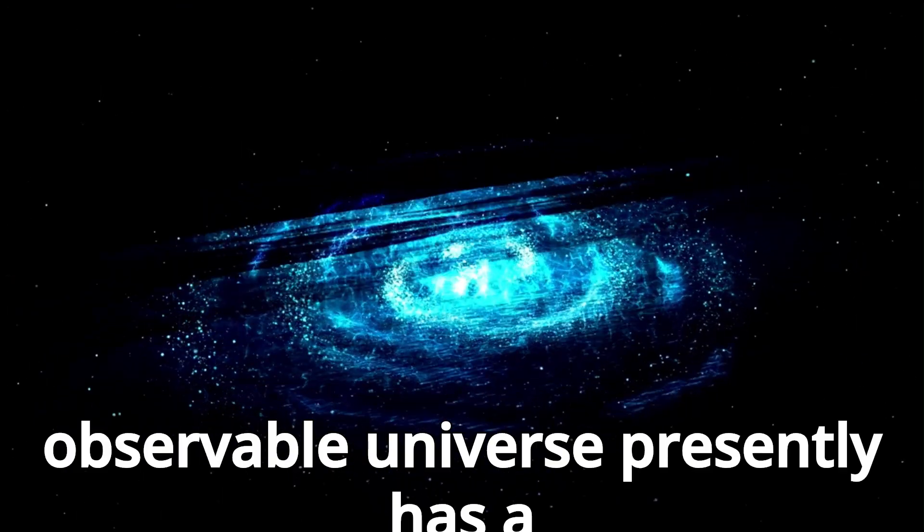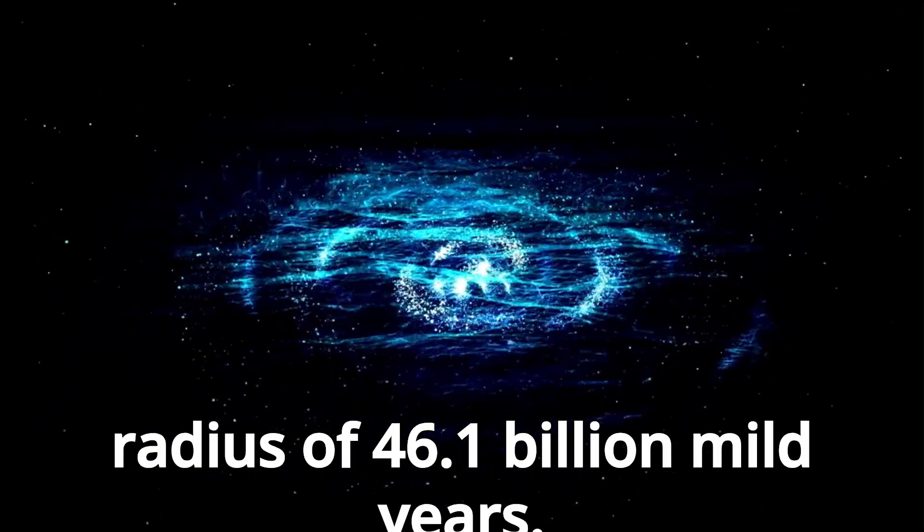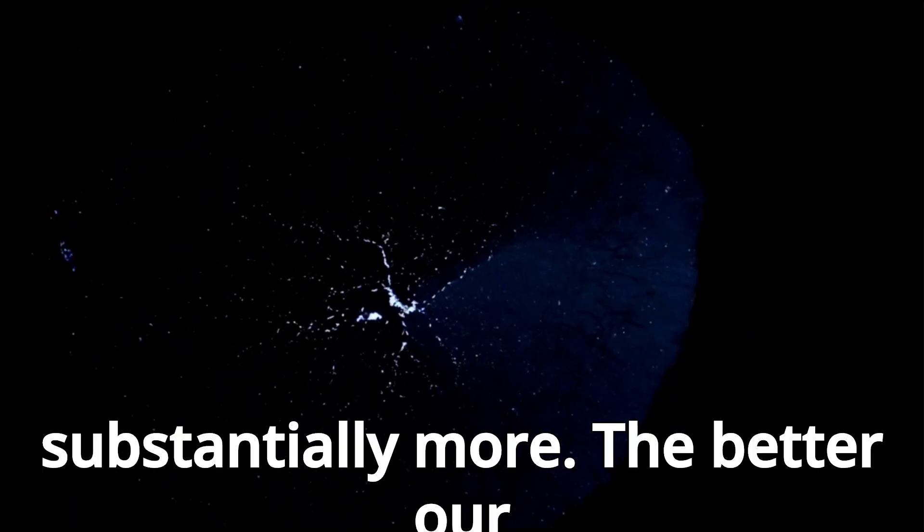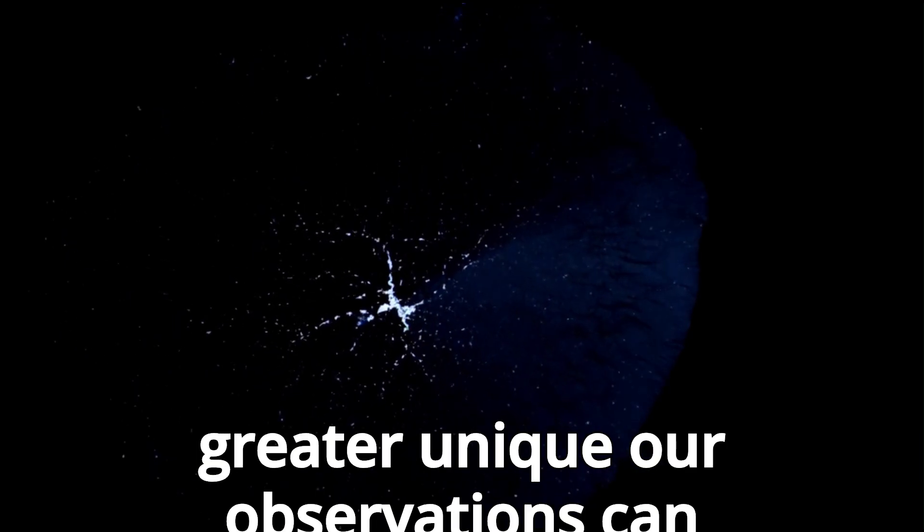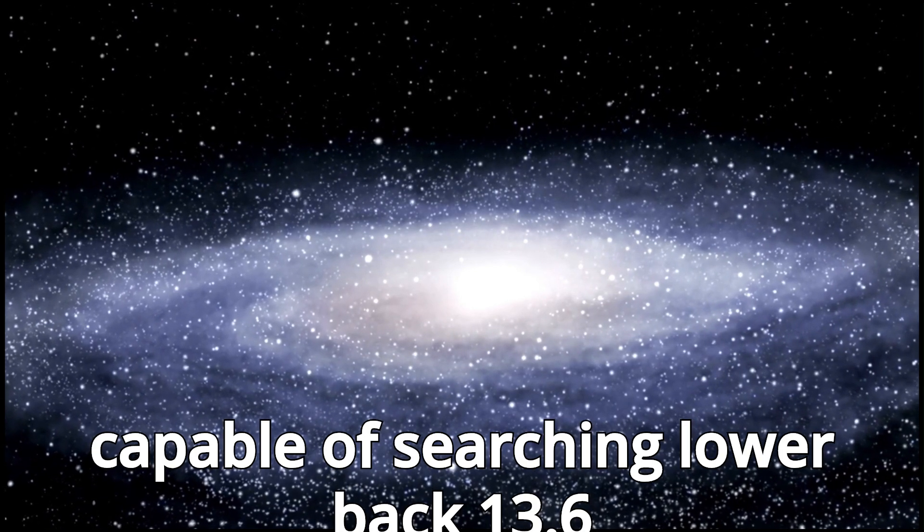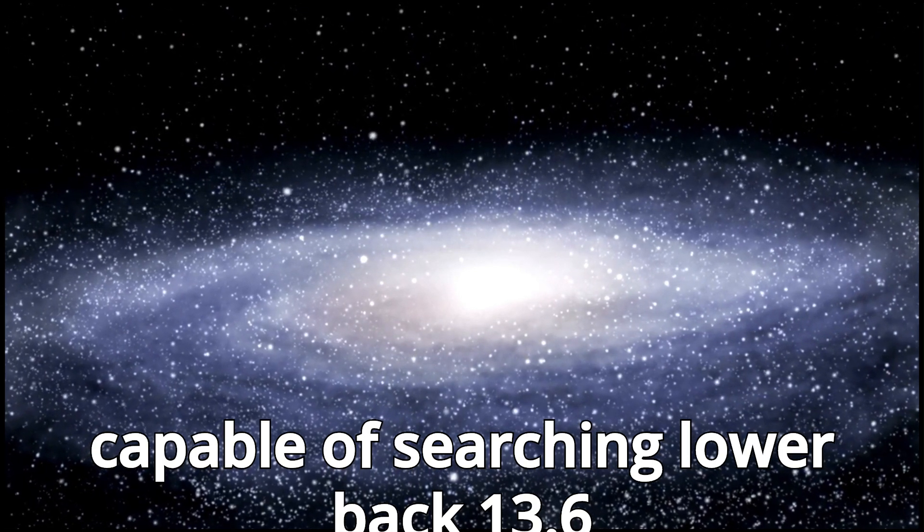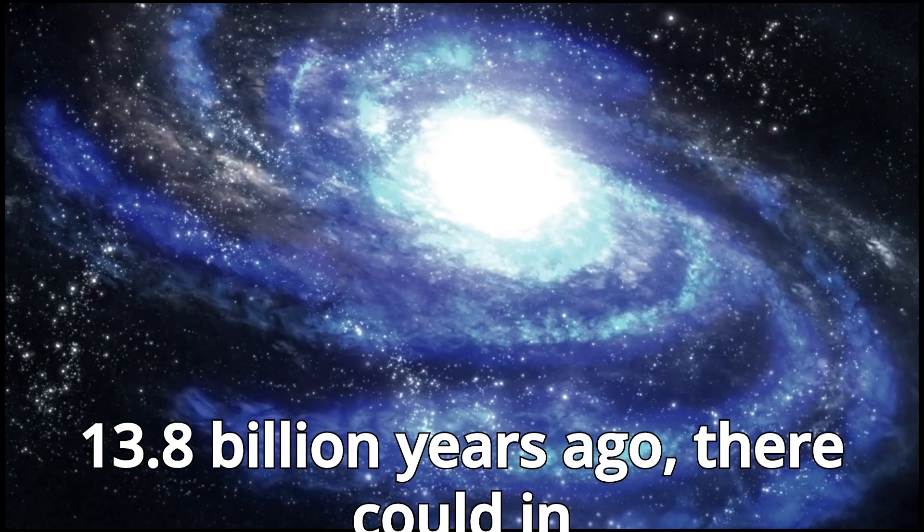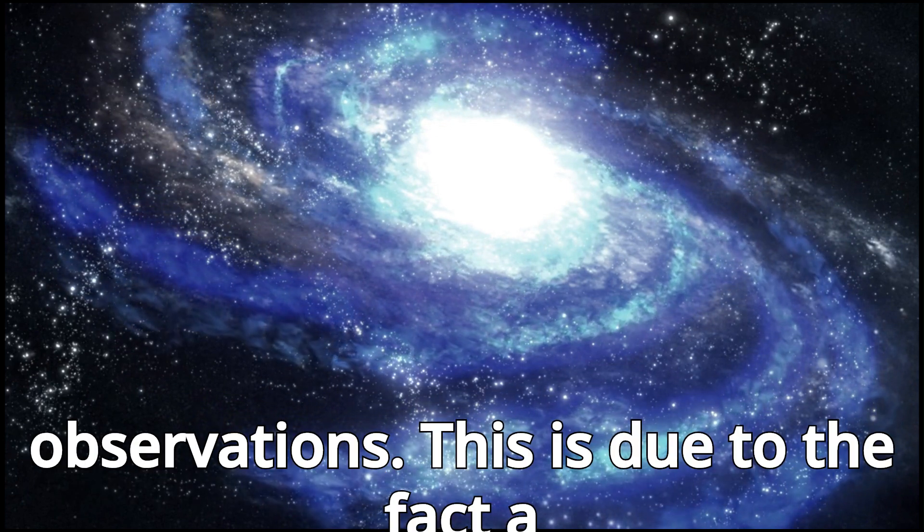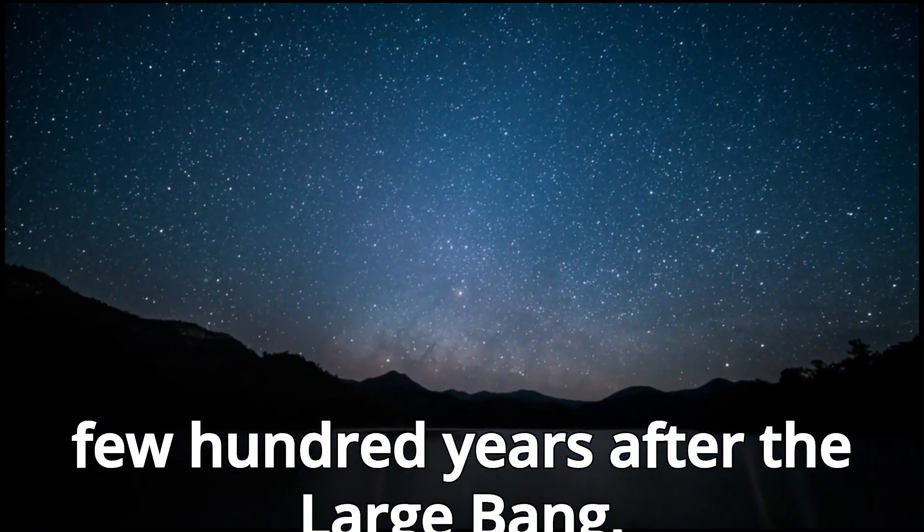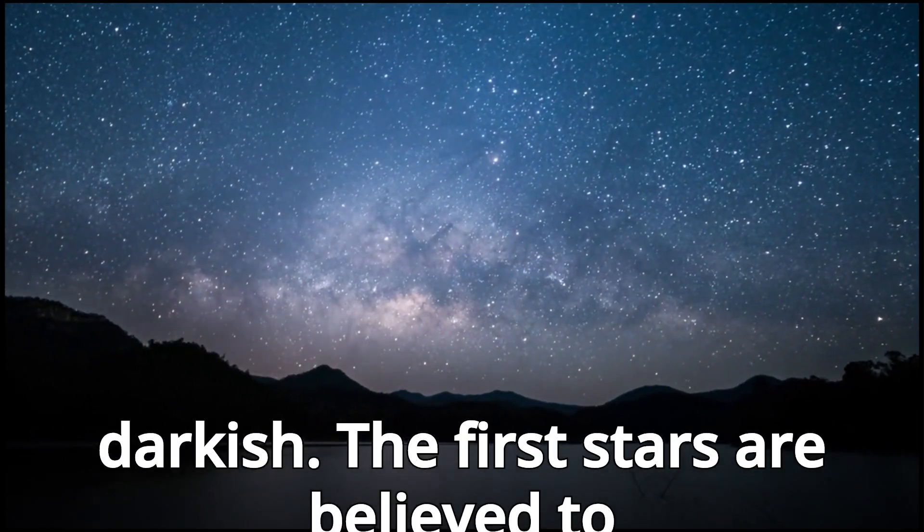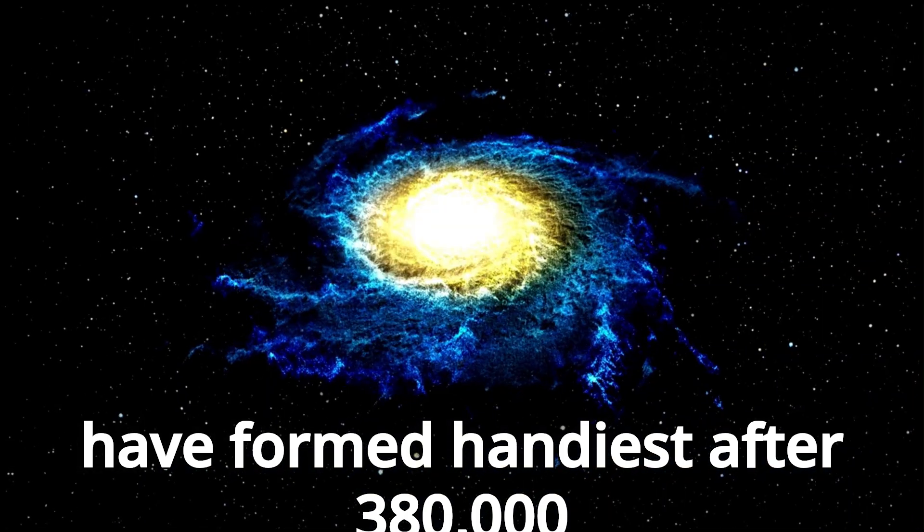The observable universe presently has a radius of 46.1 billion light years. Beyond that, there is probably substantially more. The better our technologies become, the further and more detailed our observations can reach. James Webb is hypothetically capable of looking back 13.6 billion years. If the Big Bang happened 13.8 billion years ago, there could eventually be a limit to our observations. This is because a few hundred thousand years after the Big Bang, the universe would have been completely dark. The first stars are believed to have formed only after 380,000 years.